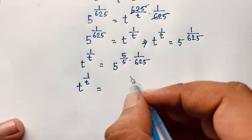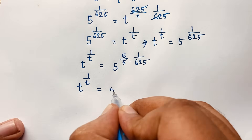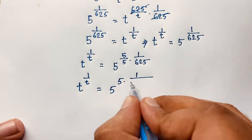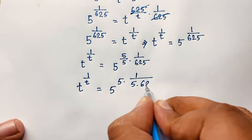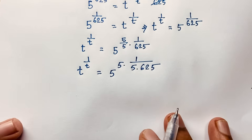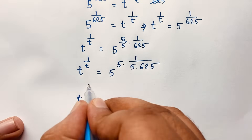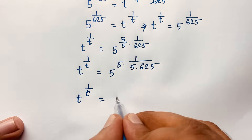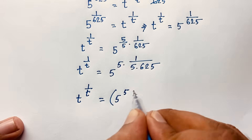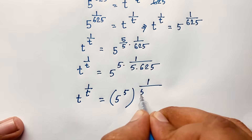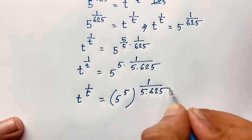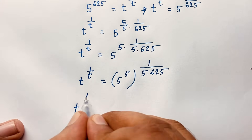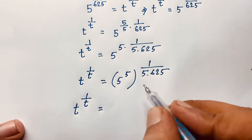Using the exponential formula, I rewrite this as: 5 to the power 5, the whole bracket raised to 1 over 5 times 625. So t to the power 1 over t equals 5 to the power 5, raised to the power 1 over 3125.